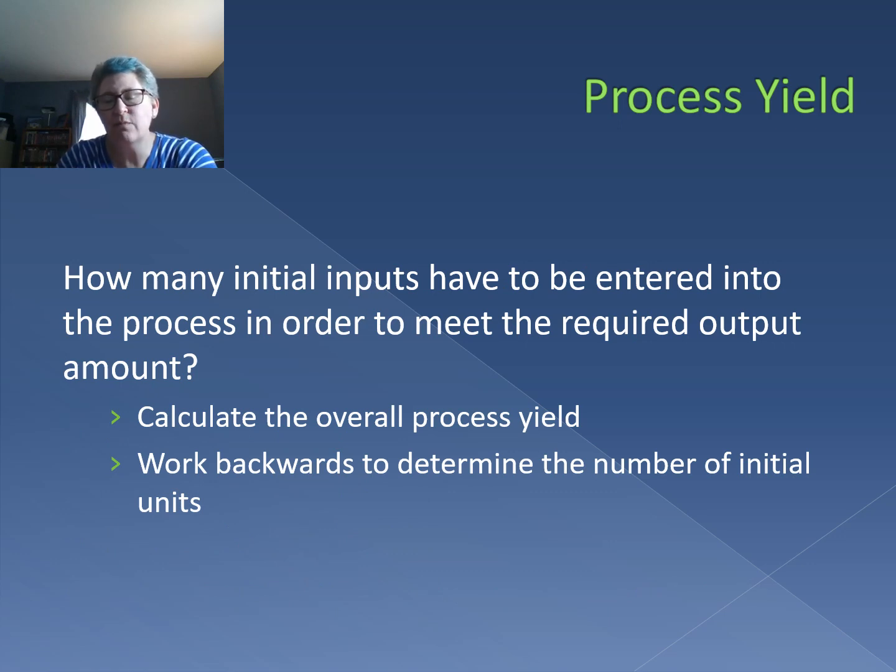This means we have to be careful in our calculation of the total number of inputs into our process. We have a demand requirement that we have to meet. If we know that we're reducing the number of outputs at each stage, we have to be aware of our overall process yield so we know how many initial units we need to start with. We calculate that overall process yield by multiplying all of those individual yield rates together, then we work backwards to determine the number of initial units.